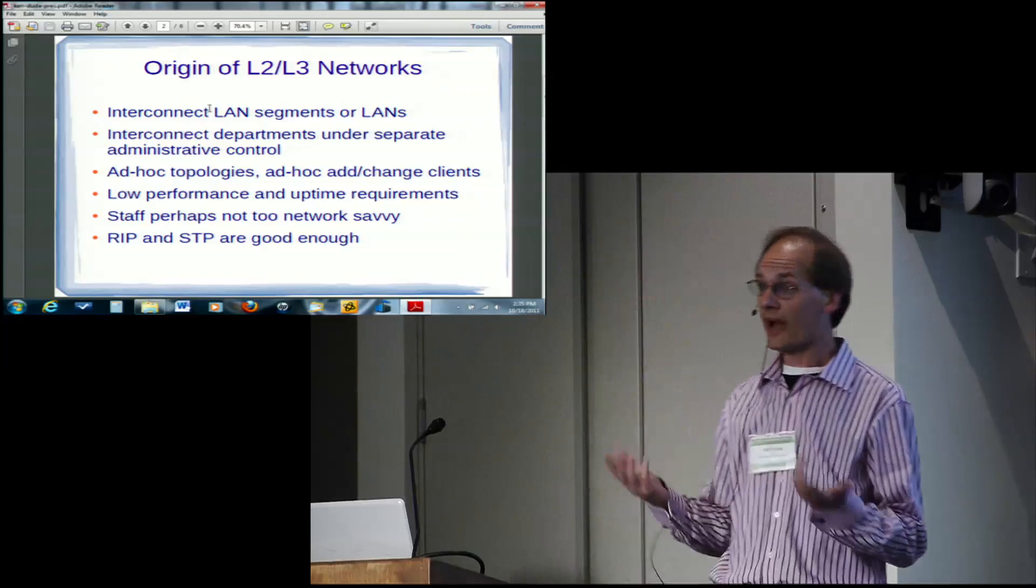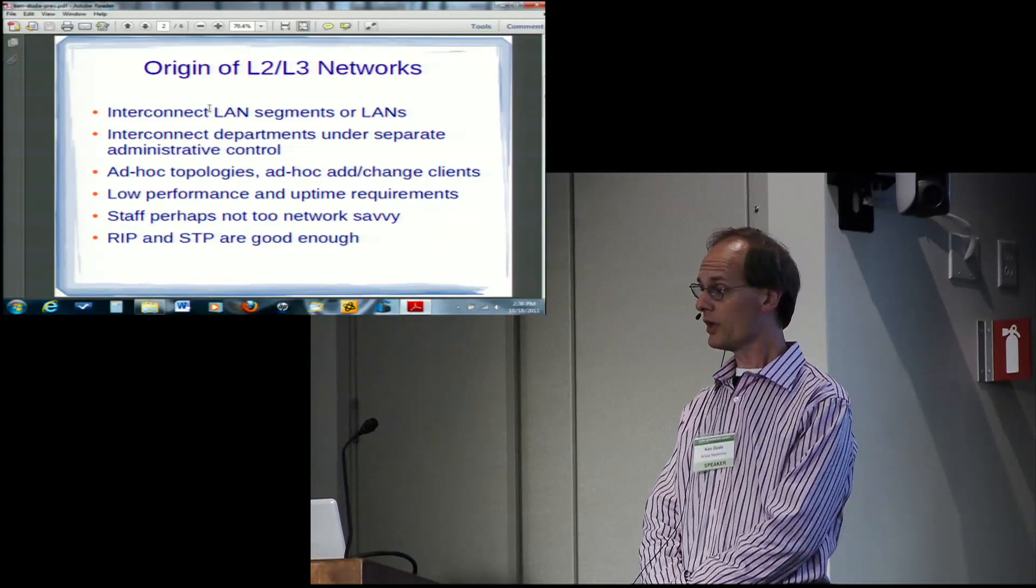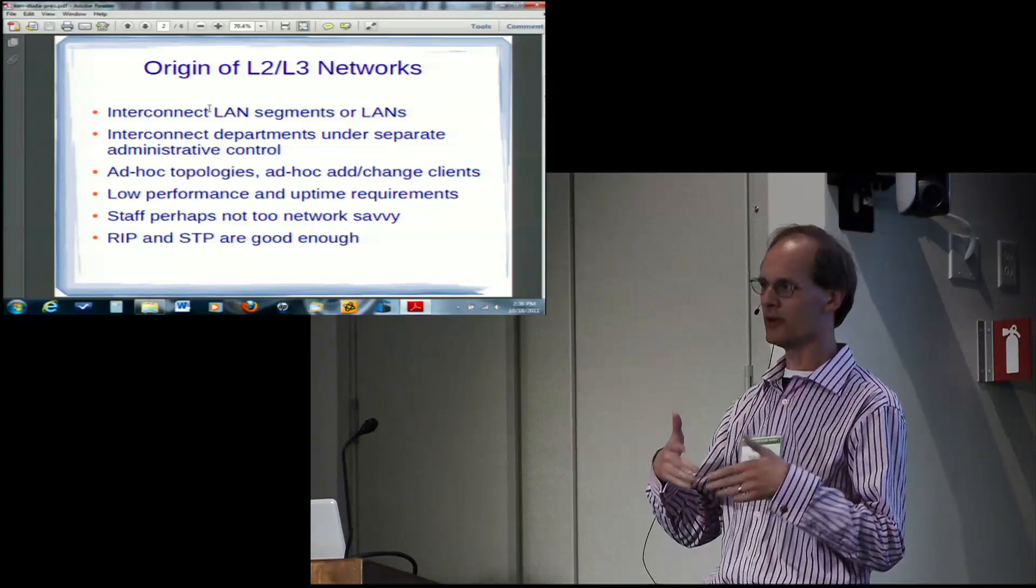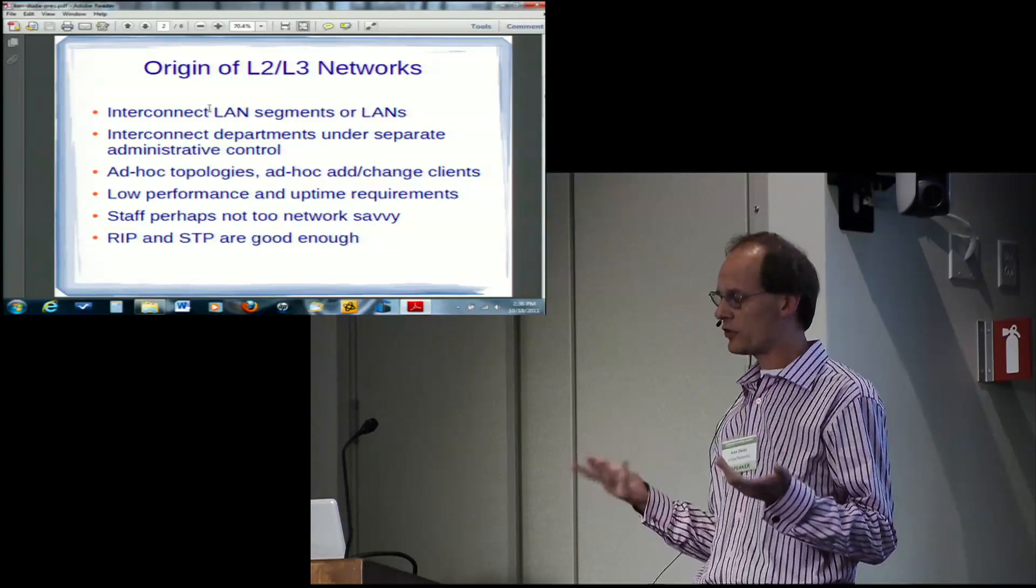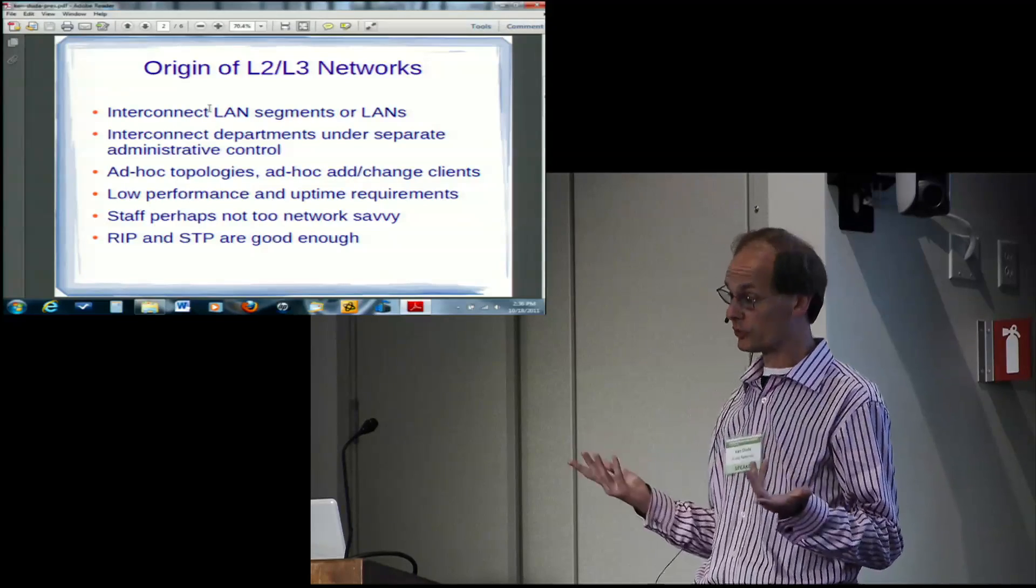Taking a step back and looking at this problem from the point of view of historical evolution, if you think about where layer two, layer three networks came from, you've got to rewind your brain back to late 70s, early 80s, maybe mid 80s, and think about what networks in various organizations, like universities, looked like then.